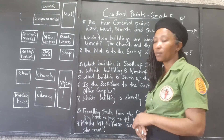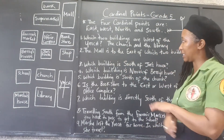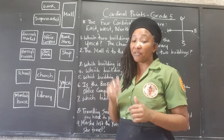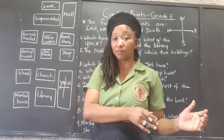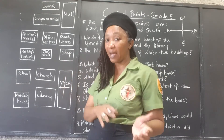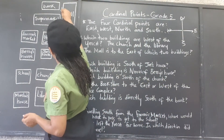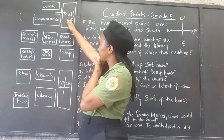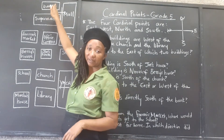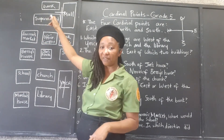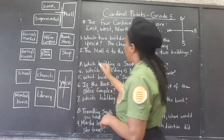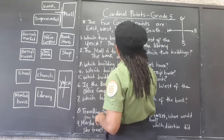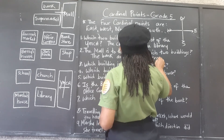Number two: the mall is to the east of which two buildings? The point of reference is the two buildings — the mall is to the east of them. So we would draw our cardinal points there, and east is that way. So if the mall is to the east, then these are the two buildings. The mall is to the east of the bank and the supermarket.